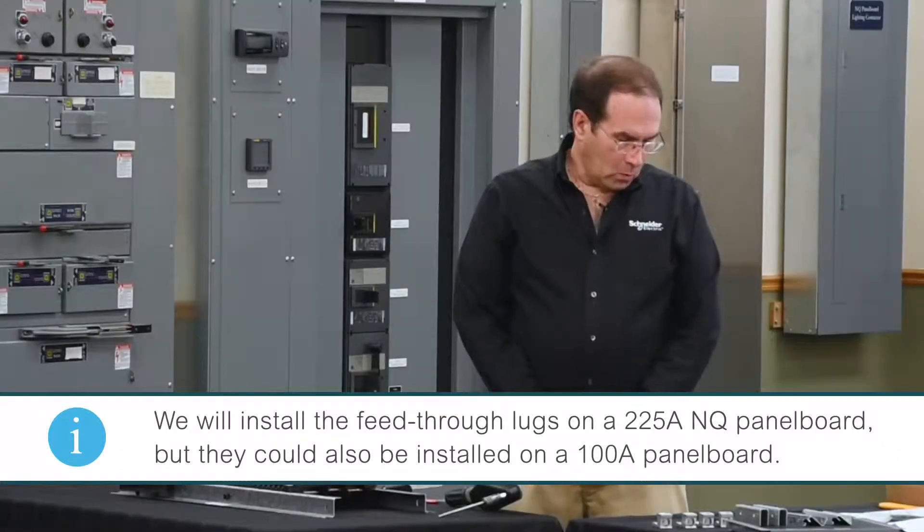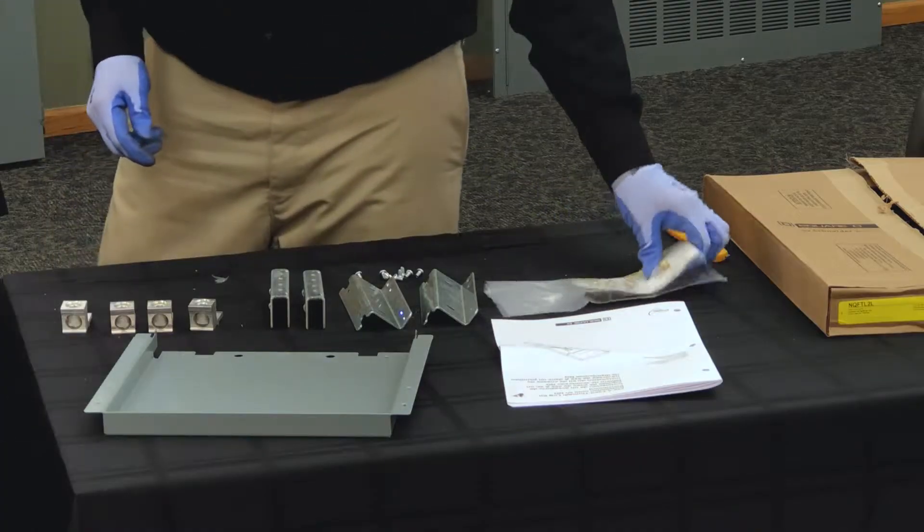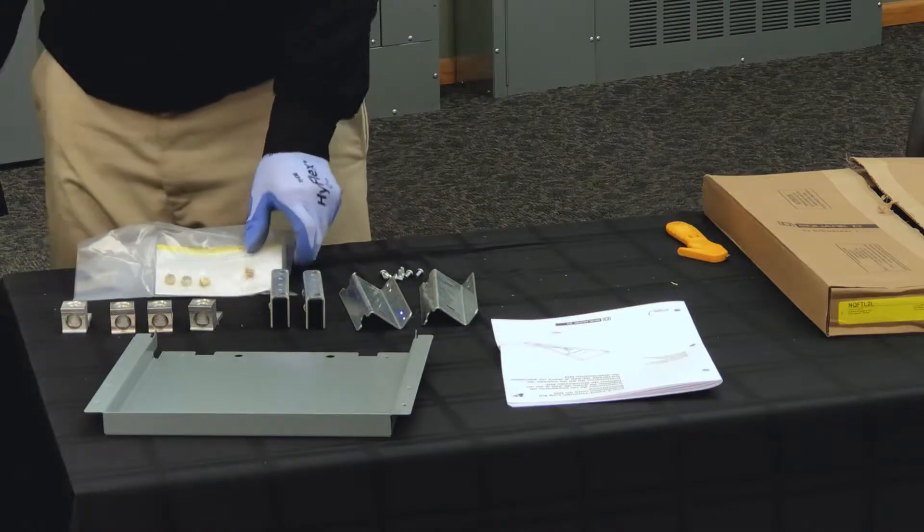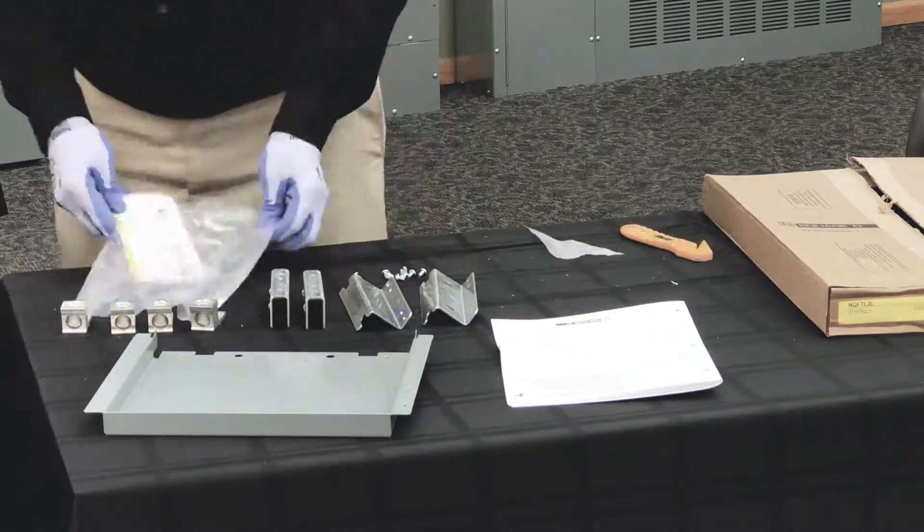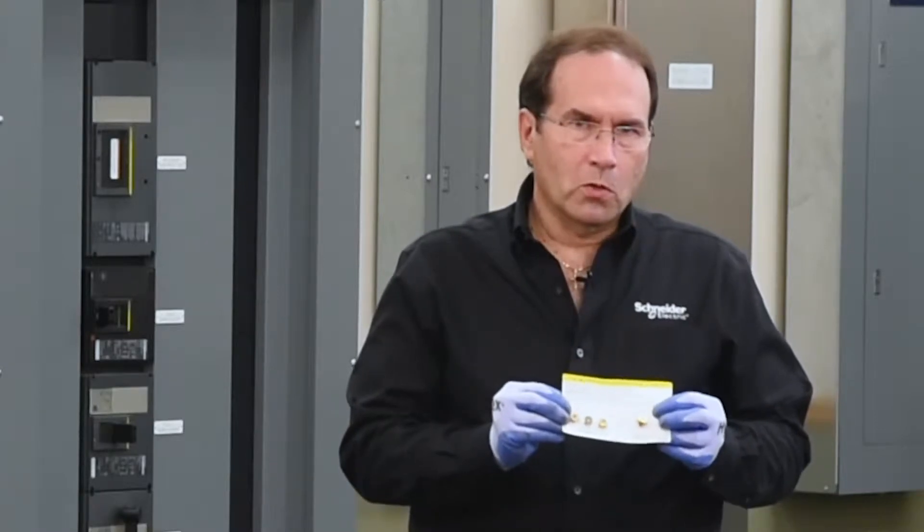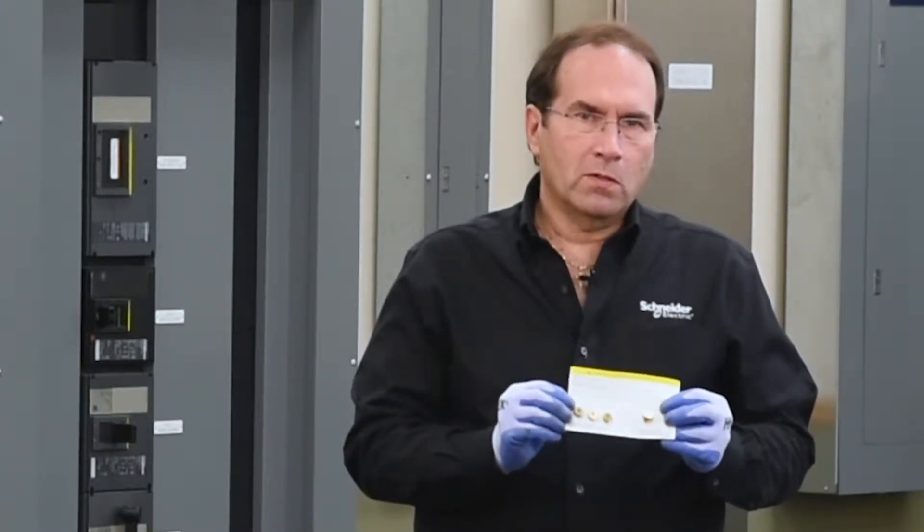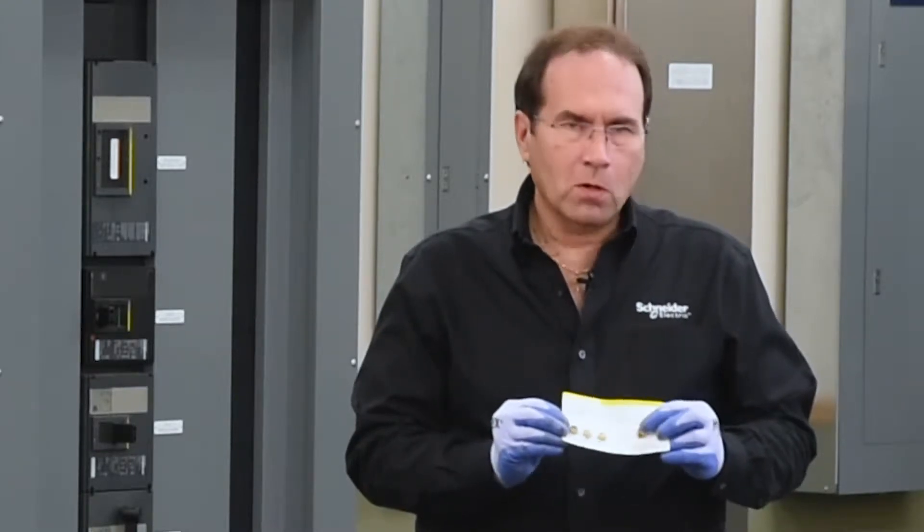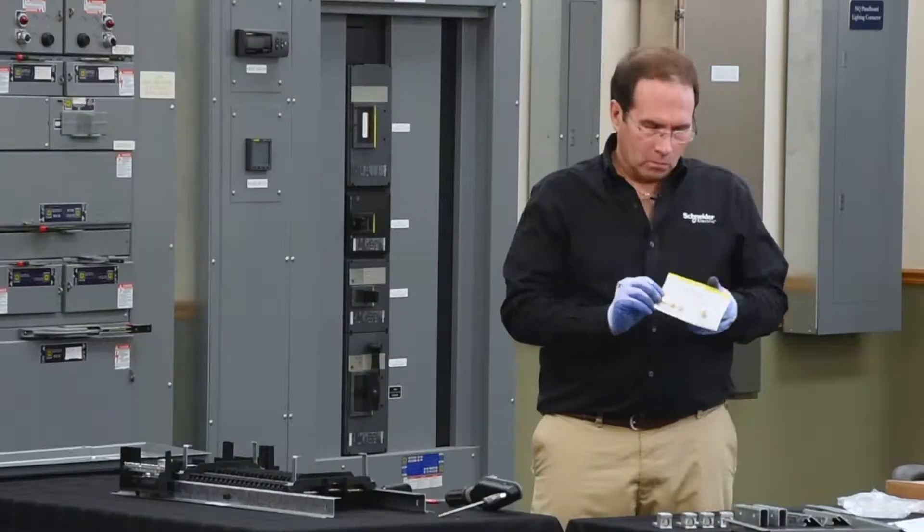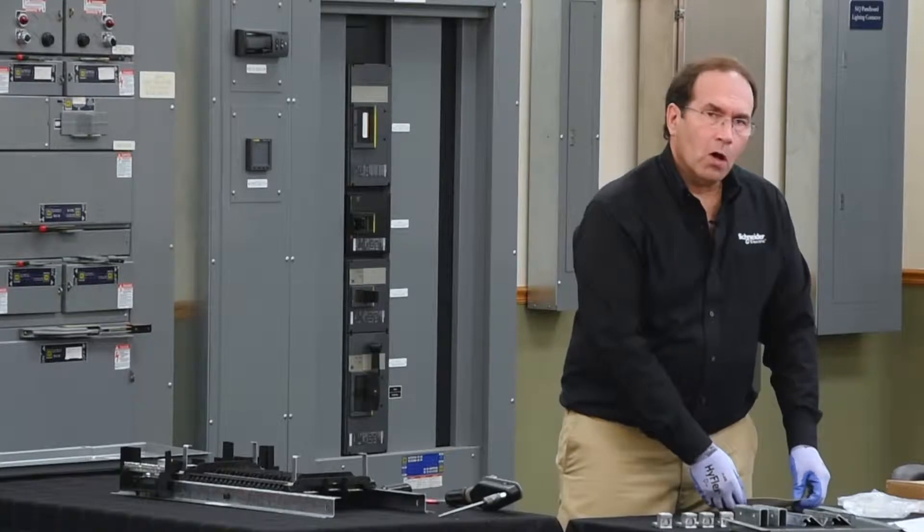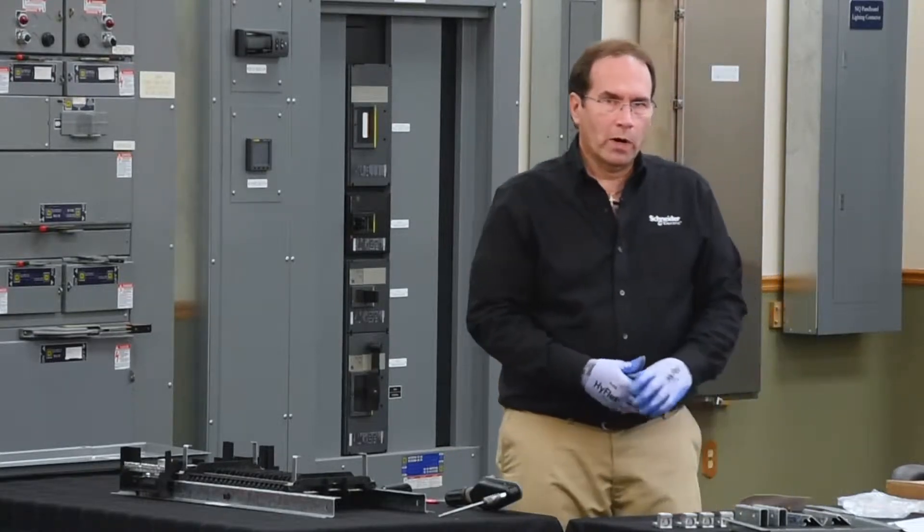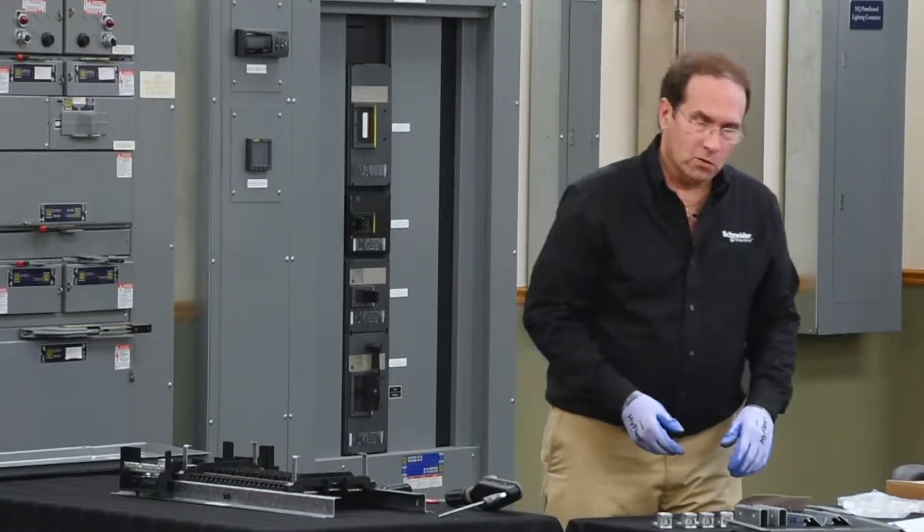The first step will be to open the hardware card assembly. The hardware card contains the hardware that you'll need to install the lugs. There's one per phase for the bus bars and there's one for the neutral lug. The card also contains the torque values required to properly install the lugs on the panel board.